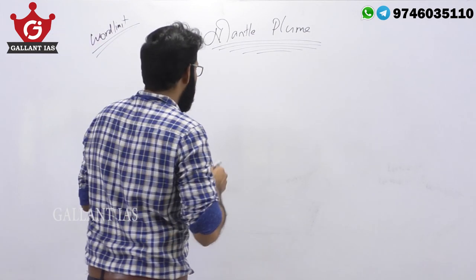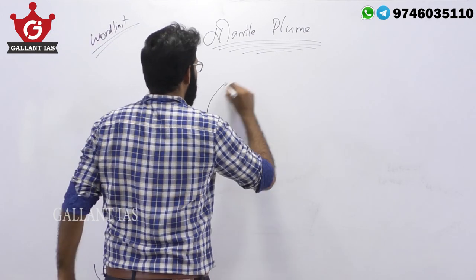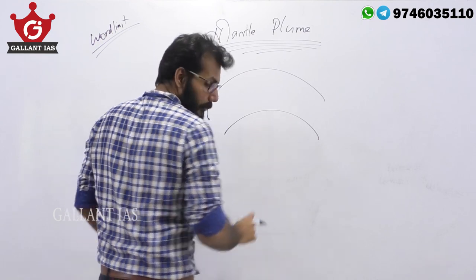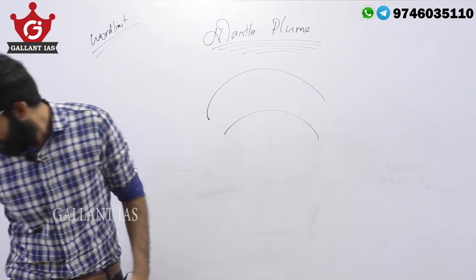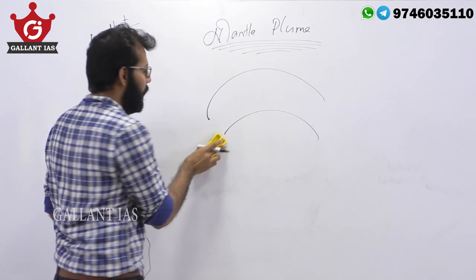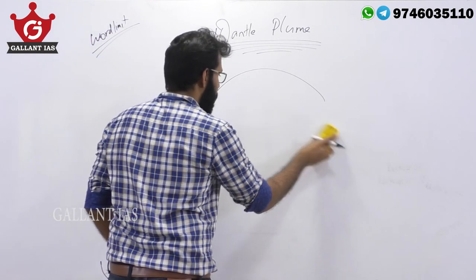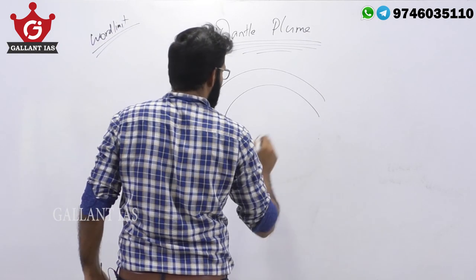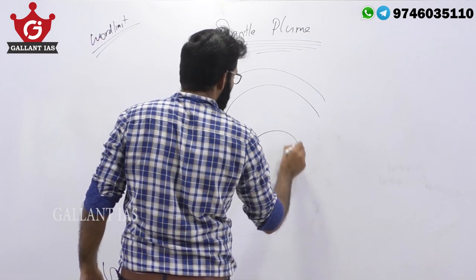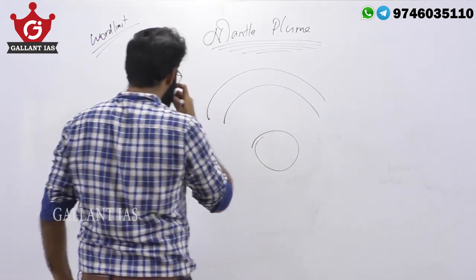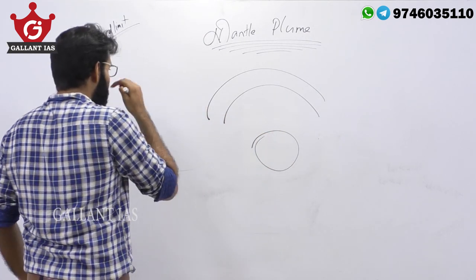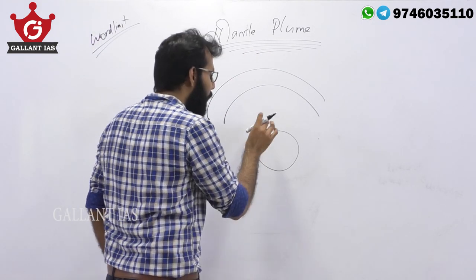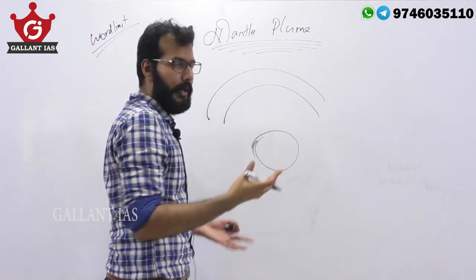We know we have different kinds of layers within the earth. We have the crust, the mantle, and the core. The word itself says mantle plume — so it has something to do with the mantle.